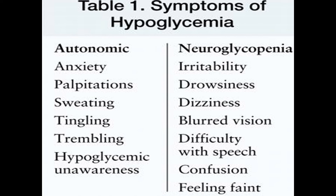The brain is not receiving glucose, which is its main source of energy. The patient may not only become unconscious but also experience mental dysfunction when glucose falls below 50 mg/dL. Autonomic symptoms include palpitation, sweating, anxiety, tingling, and trembling.